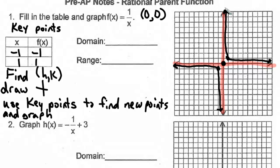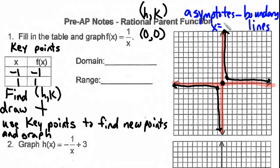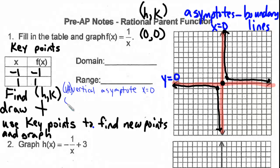These red lines are actually asymptotes. Asymptotes are boundary lines. The vertical line is at x equals 0, and the horizontal line is at y equals 0. So x equals 0 is our vertical asymptote, and our horizontal asymptote is y equals 0.